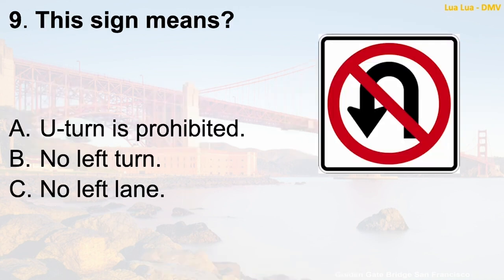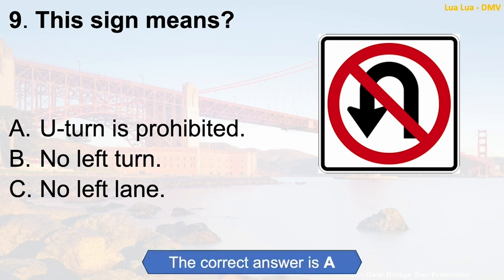Question 9: This sign means — A. U-turn is prohibited. B. No left turn. C. No left lane. The correct answer is A: U-turn is prohibited.